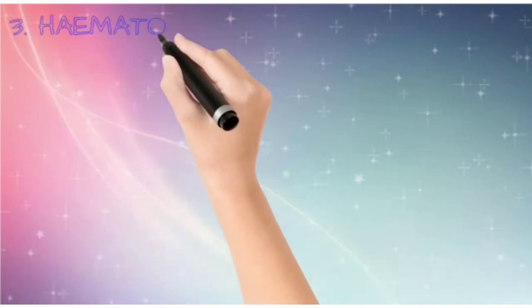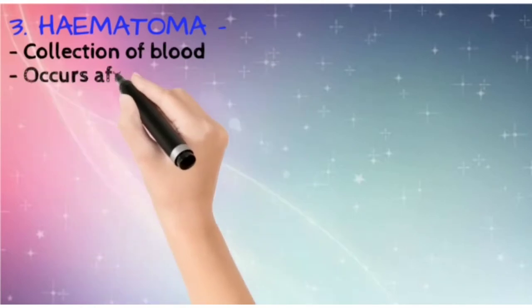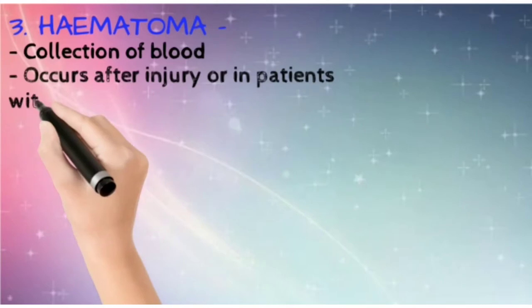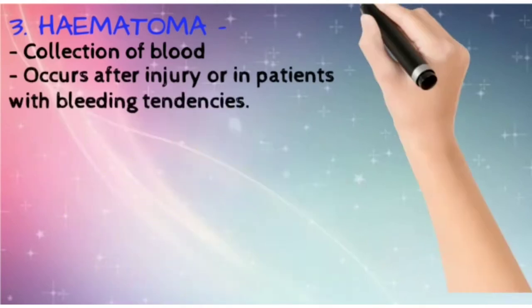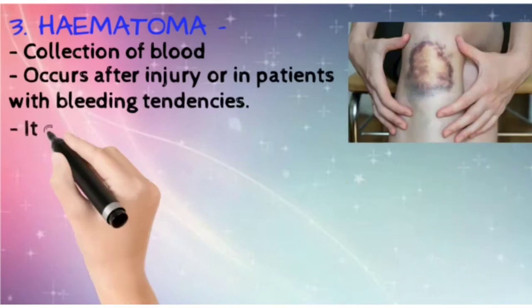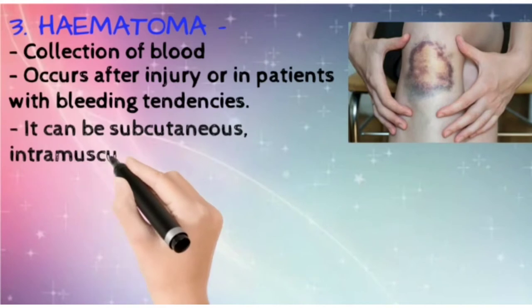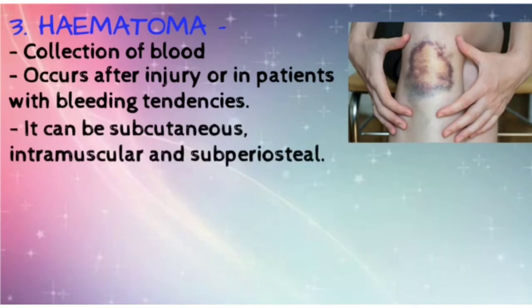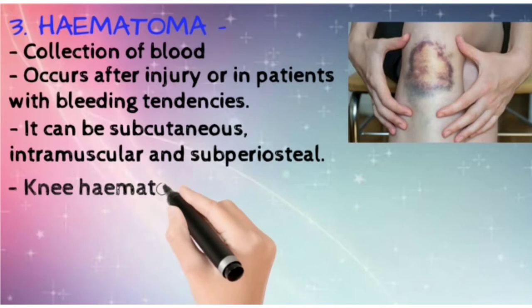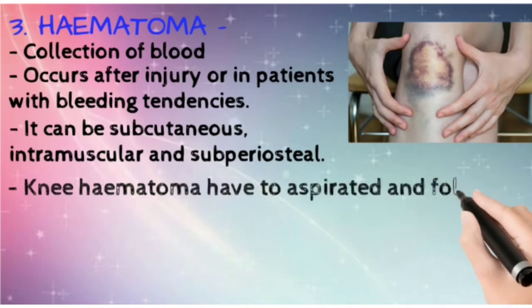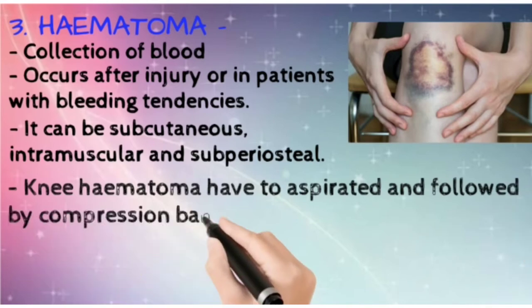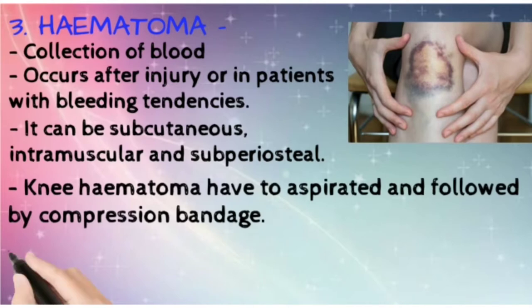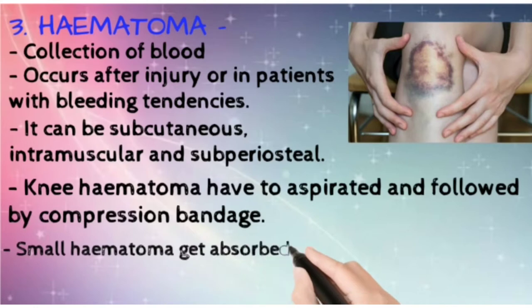The third type of closed wound is hematoma. If you have any injury or if the patient has any bleeding tendencies, it can occur. You can see the picture also. It can be subcutaneous, intramuscular, or subperiosteal. Hematoma is essentially a collection of blood.